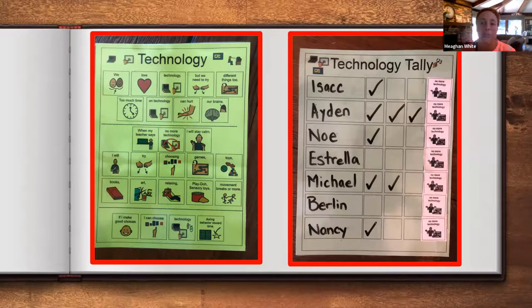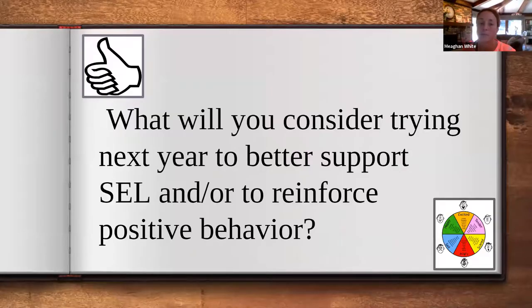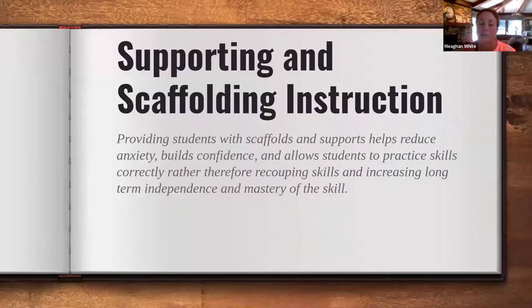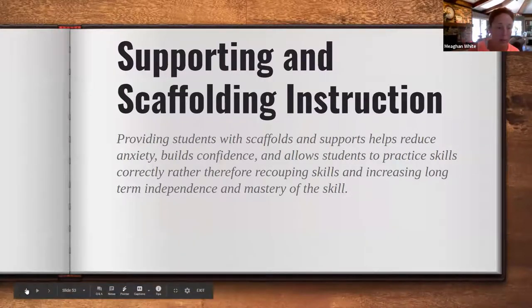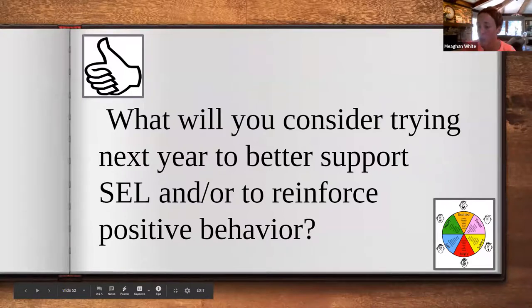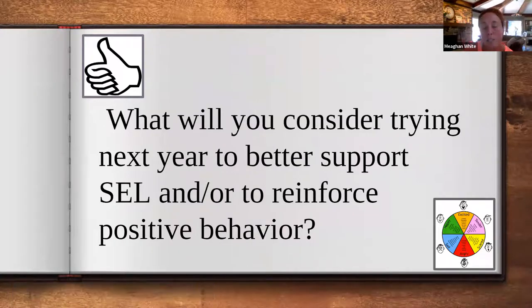This is an example of a whole group social narrative we used as a class to limit time on technology. Students were constantly asking for technology during choice time, so instead of having a battle each time, they knew the expectations were clear. As a reflection — I am looking at time — let's check in and see if there are any questions at this point, and reflect on what you might consider trying for next year.